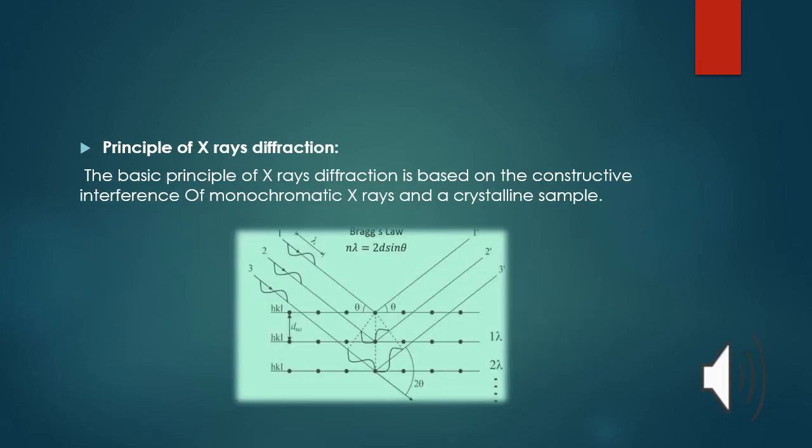Principle of X-ray diffraction. Why XRD? For what purpose XRD is used? Measuring the average spacing between layers or rows of atoms, orientation of single crystal or grain. The basic principle of X-ray diffraction is based on the constructive interference of monochromatic X-rays and a crystalline sample. It is also based on Bragg's law, the rays coming towards the source and after diffracted towards different directions.